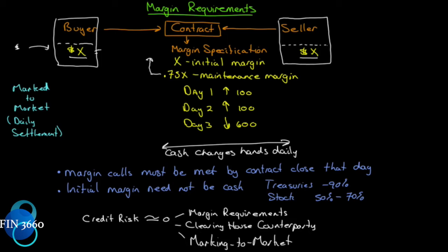On day one, the futures contract is up a hundred dollars. The buyer has a long position and the seller has a short position. So if the contract is up a hundred, the buyer is up a hundred. The buyer will have X in their account plus $100. The seller will have X minus $100.